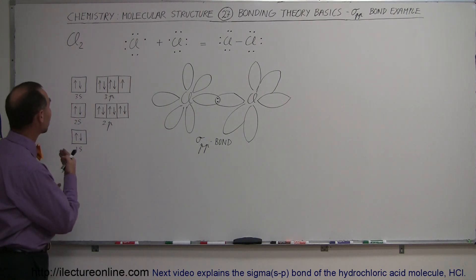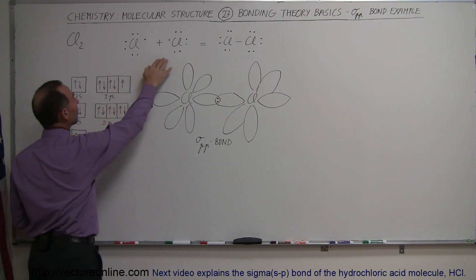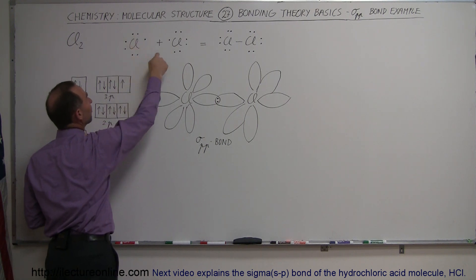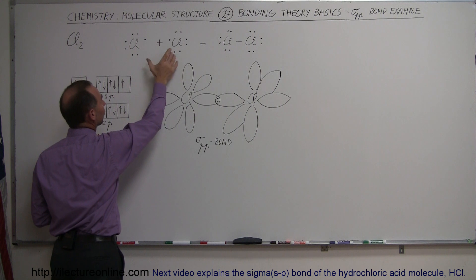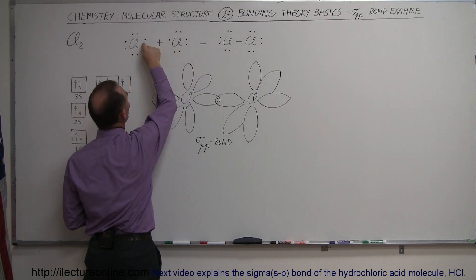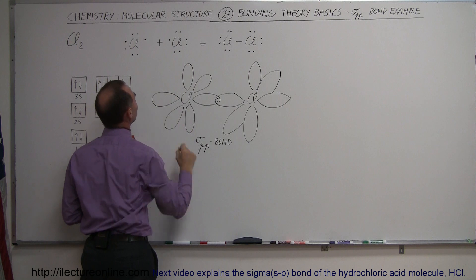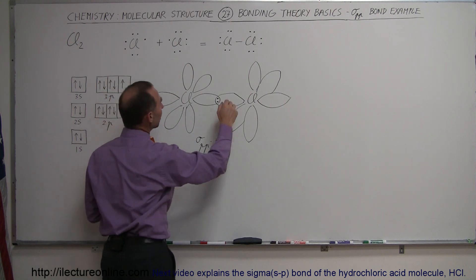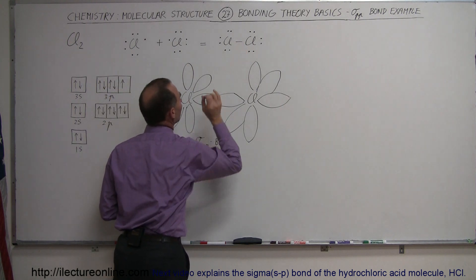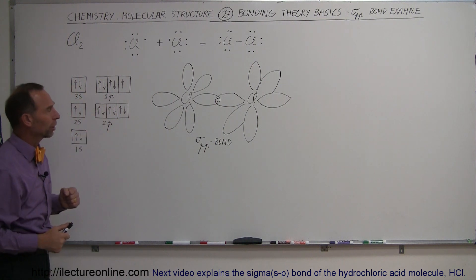Here we have the chlorine gas molecule — two chlorines. They each have seven valence electrons, and when they make a bond they can share the one electron in one of the three p orbitals and form a bond like that. So that's what the Lewis structure would look like.